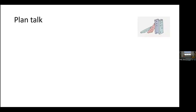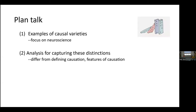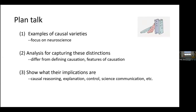With this background in mind, the plan for my talk involves three main steps. In the first part, I'll give a brief mention of the account of causation I rely on. I'll then quickly move on to capturing different types of causal varieties. In the second part, I'll provide an analysis for capturing these distinctions — and I'll suggest this is very different from defining causation. In the third part, I'll say why these distinctions matter: they matter for causal reasoning, for different types of explanation in science, for control, and for science communication.